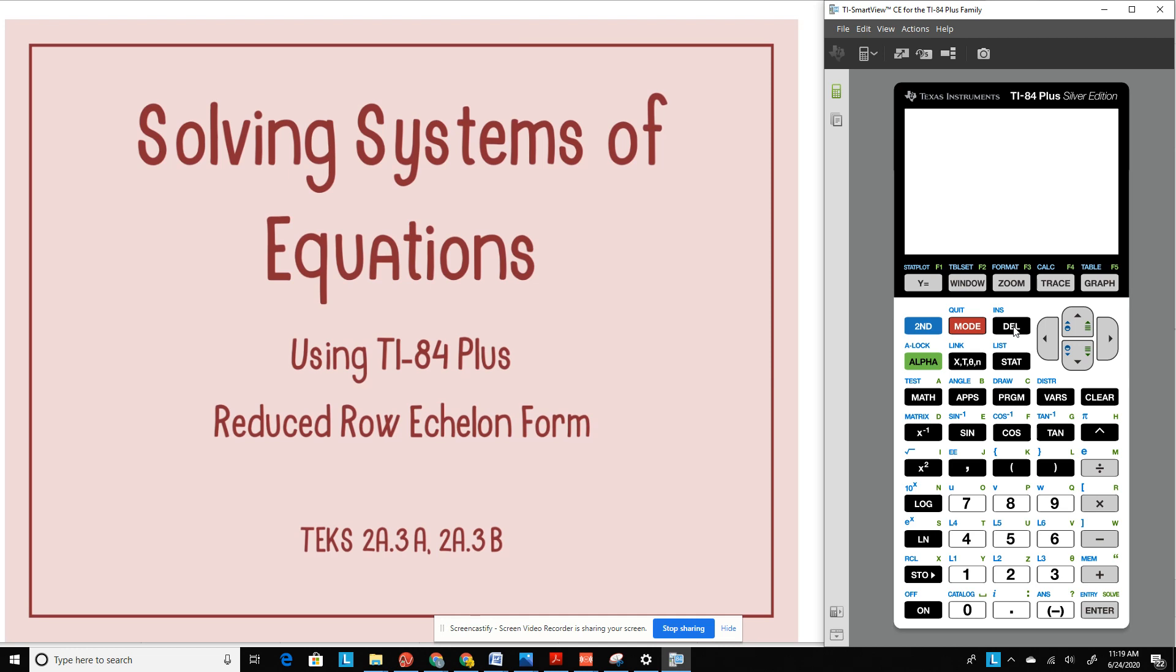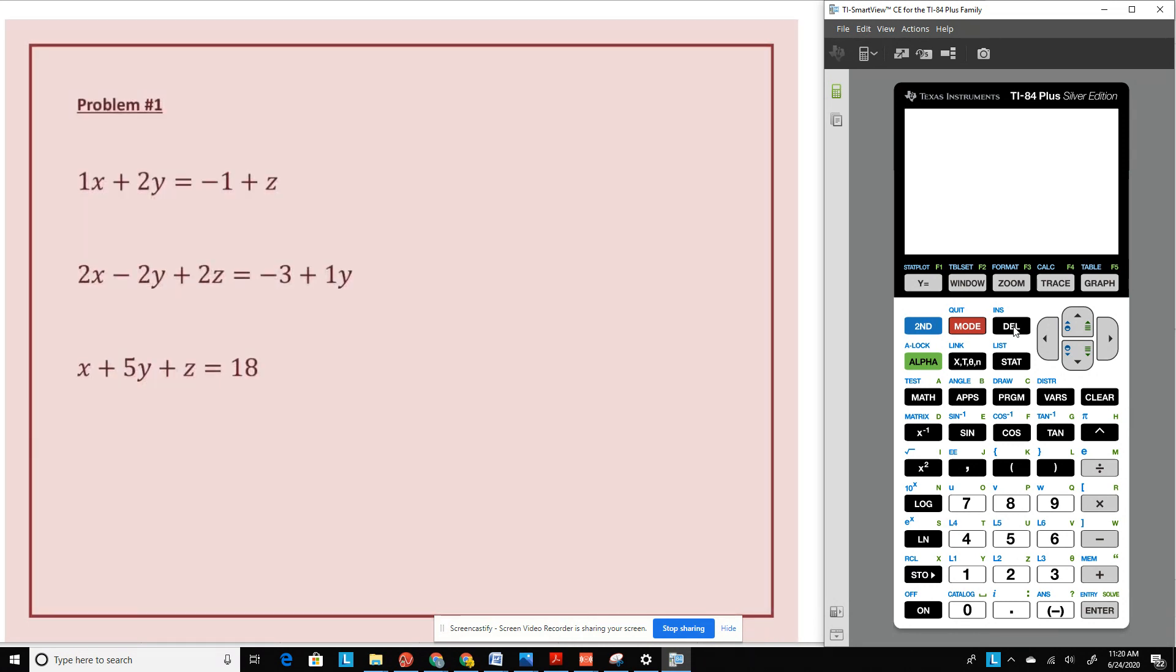Today we are going to be solving systems of equations using the TI-84+. We will be using reduced row echelon form. Rule number one of solving systems is that they must be written in standard form. So standard form means it has to be x, y, z equals a number.